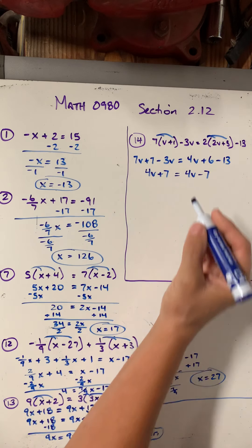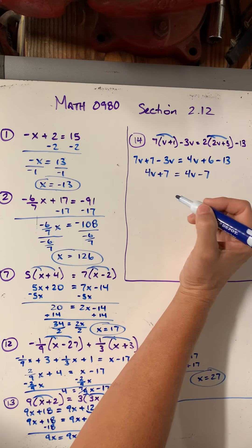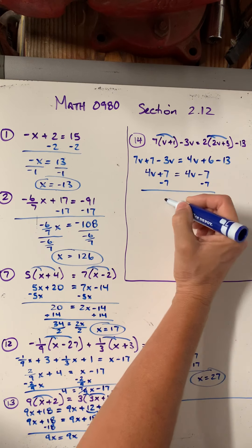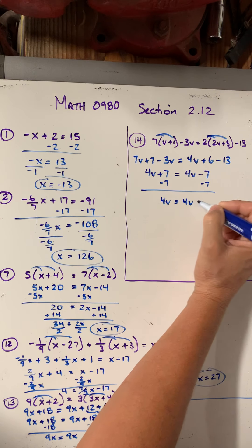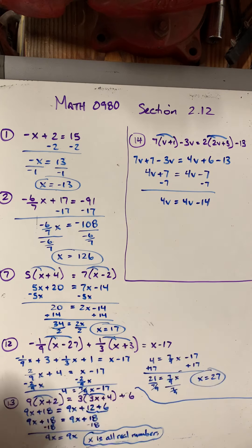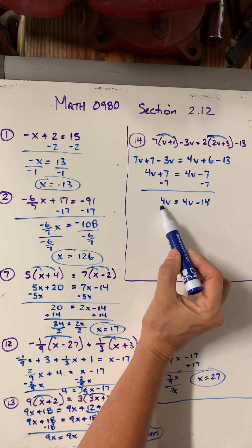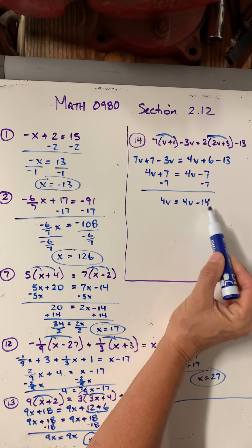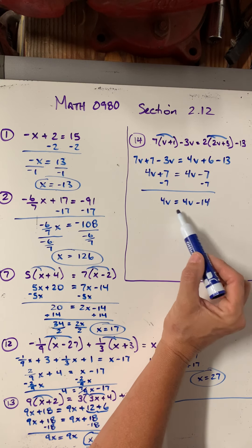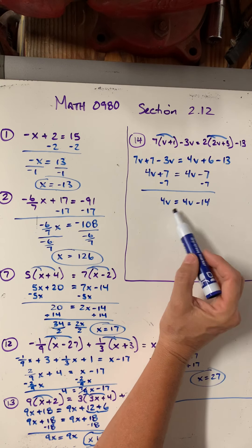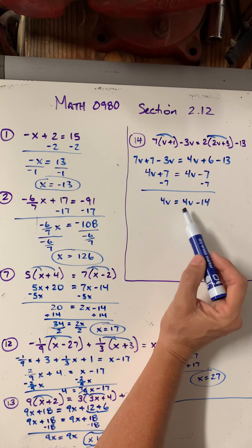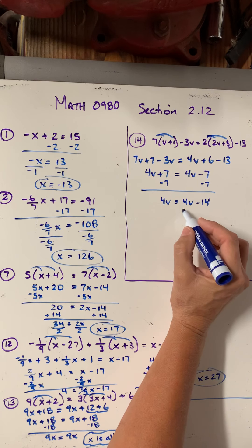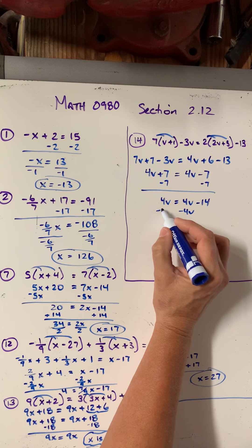There's no number I could put in for v that's going to make this side equal that side. But we could keep going. Let's say we minus the 7. We get 4v equals 4v minus 14. So if I took a number and I multiplied it by 4, would that ever equal the same number multiplied by 4 and then minusing 14? So maybe you'll start to see it at this point. The answer is no. There's no number I could put in for v that would cause these two sides to be equal. But what would my next move be? Let's say I subtract 4v from both sides.